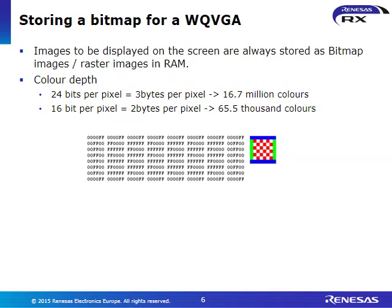If you want to display a picture on a TFT, you need to store a bitmap in some kind of RAM or memory — it could be internal or external to the MCU. You need quite a lot of memory because bitmaps can be pretty large, depending on the color depth per pixel. Usually we have 24-bit or 16-bit color depth, meaning three bytes or two bytes per pixel are needed.